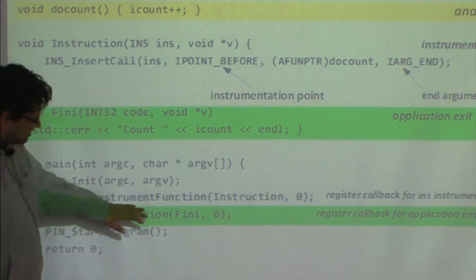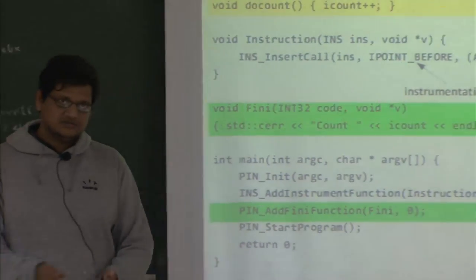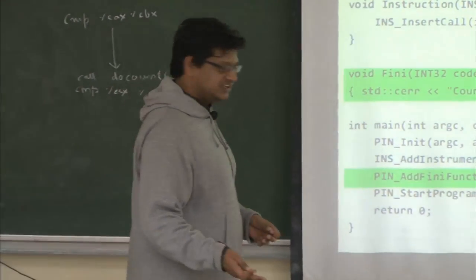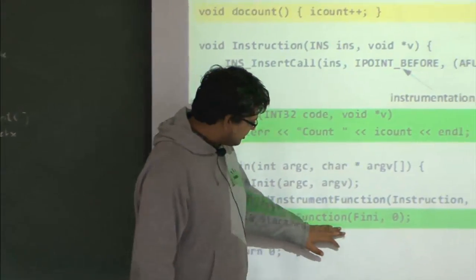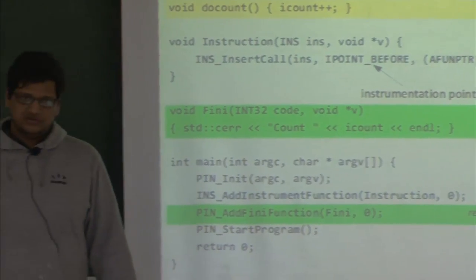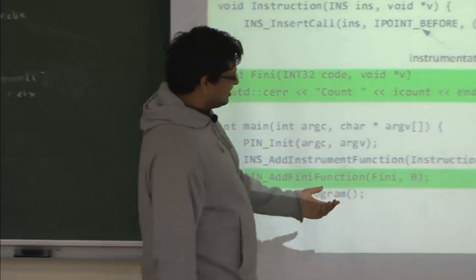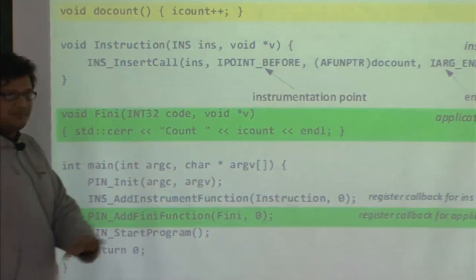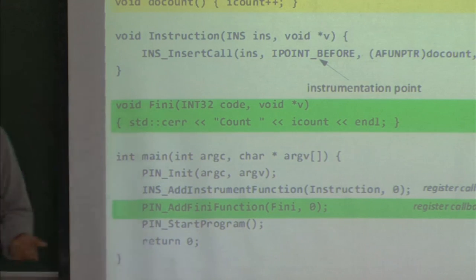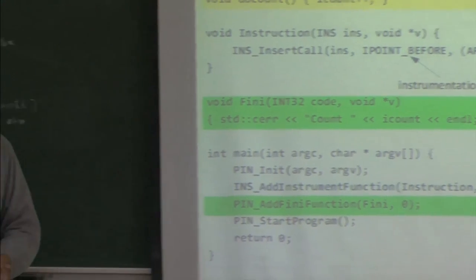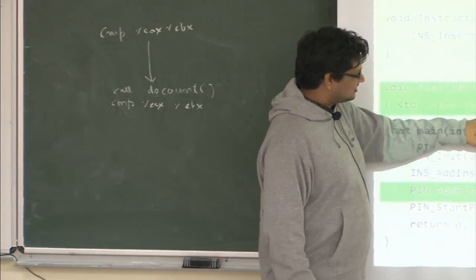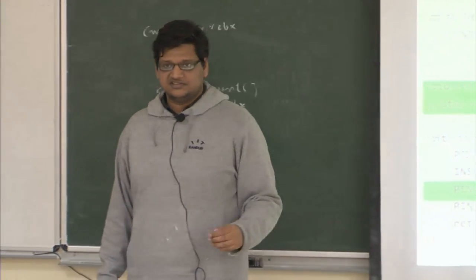PIN_AddFiniFunction registers a callback for application-end events. Whenever the application is about to exit, it calls the Fini function — which in this case prints the number of instructions that have executed. This function is used for cleanup at termination.